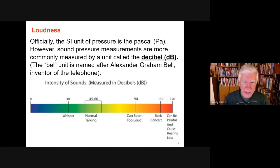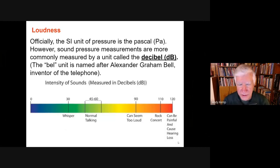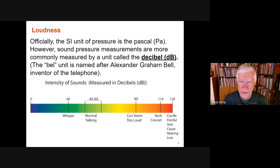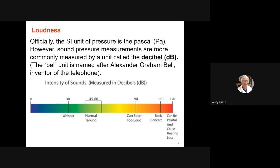While the official unit of pressure in the metric system is the Pascal, sound pressure has a different unit traditionally used — the bel, or more commonly the decibel, which gives us a slightly more sensitive measurement. The bel is named after Alexander Graham Bell, because this was originally applied to signal loss in the telephone when it was invented over 100 years ago.